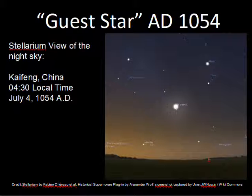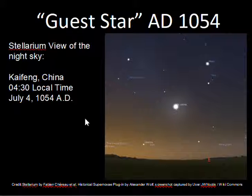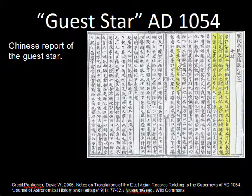This object was first observed in 1054 A.D. Different cultures recorded this, especially in China, where there are good records of the appearance of this star. This is a screenshot of the Stellarium planetarium program for PCs, a free program, showing the local sky in China at 4:30 a.m., July 4th, 1054 A.D., where this guest star appeared where there had been no visible star before. Here is the record of the appearance of this guest star.